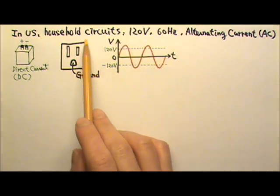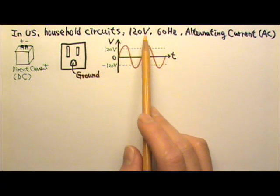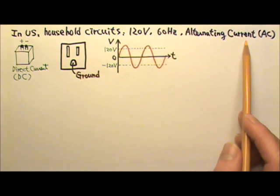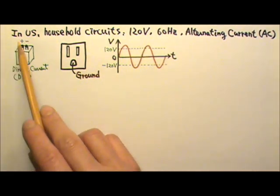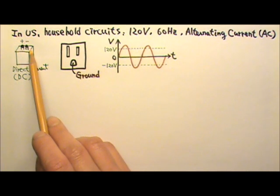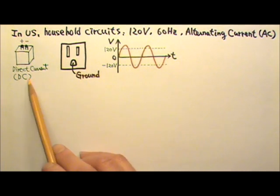In the US, household circuits use the 120V 60Hz alternating current, or AC. Unlike a battery, with fixed positive and negative terminals which provide direct current, or DC,